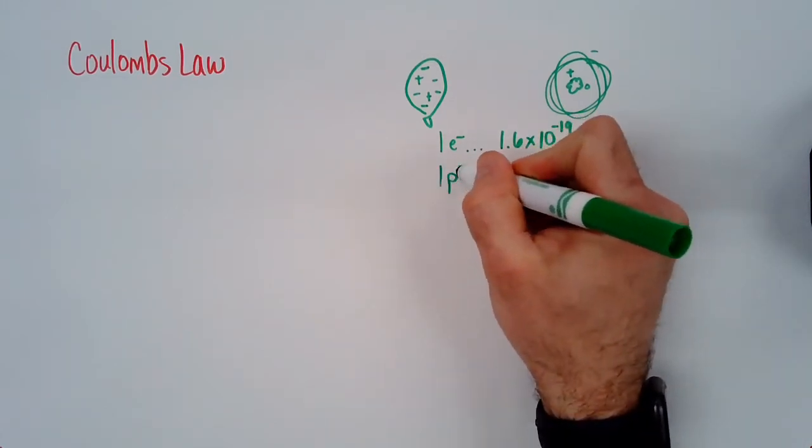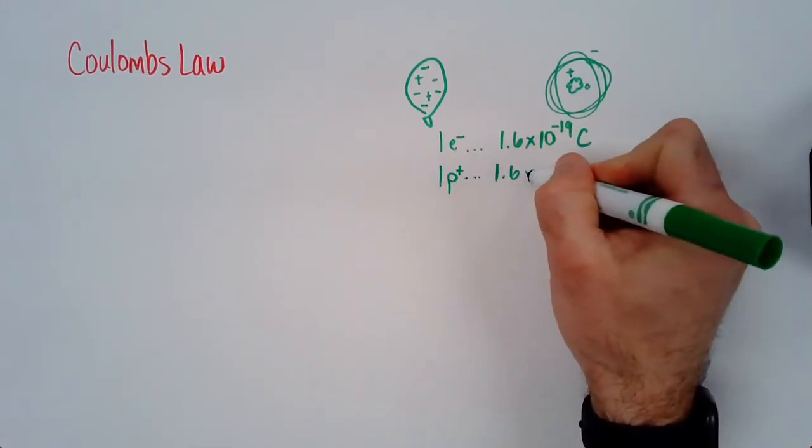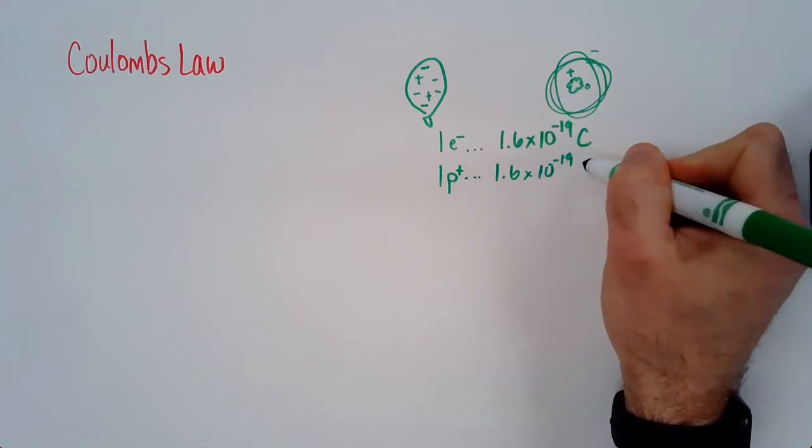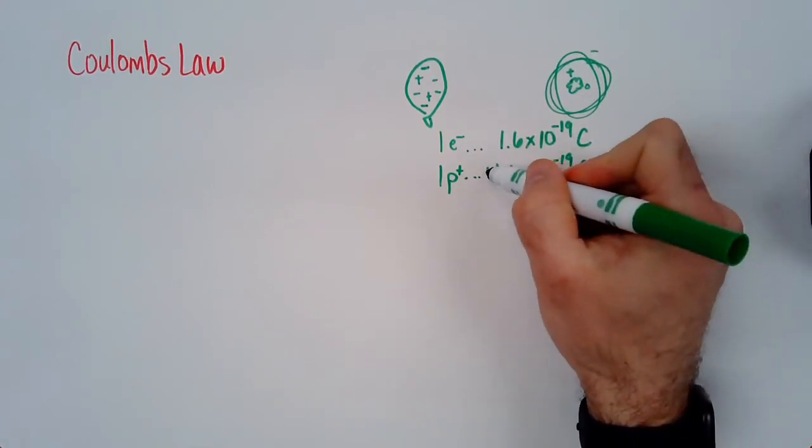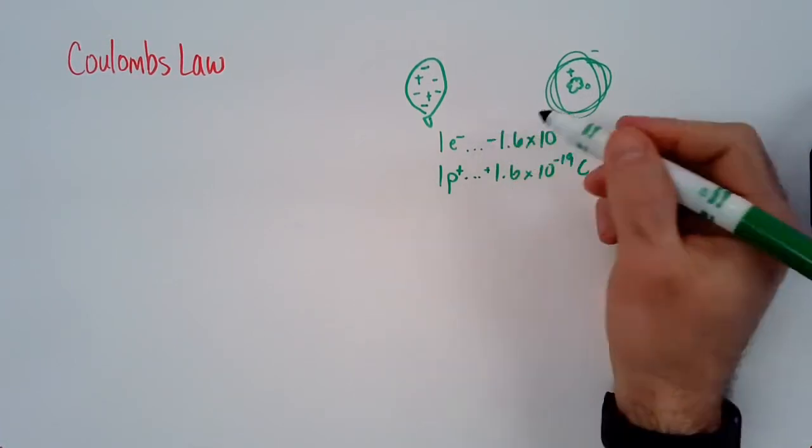One proton is also 1.6 times 10 to the negative 19th Coulombs. It's just that that would be a positive amount, and this would be a negative amount.